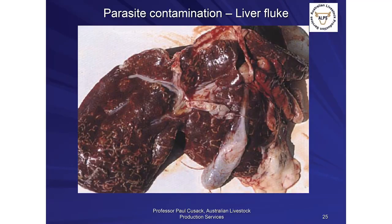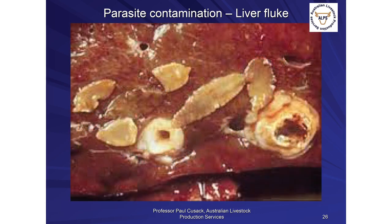Fluke-affected livers show white lines across the surface caused by migrating larvae burrowing through liver tissue and causing scarring visible at the abattoir. In more mature animals there is considerable fibrosis and calcification of the bile ducts due to fluke activity, which restricts fluke activity over time. The major effects of fluke occur in young growing animals; adult animals tend to develop resistance, but we have to consider them in our total parasite management strategy.